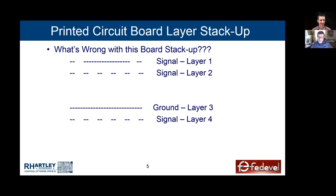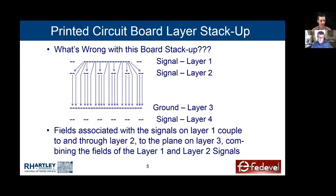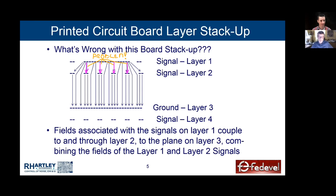When I see a problematic board stack-up — for example, a digital board with signals on layer one going in the X direction and signals on layer two going in the Y direction — the coupling between those lines is small because they go in opposite directions. But the fields from both layers reference the ground plane on layer three. The signals on layer one couple all the way to layer three, and some energy couples into the fields for signals on layer two, which is why people often have EMI problems.